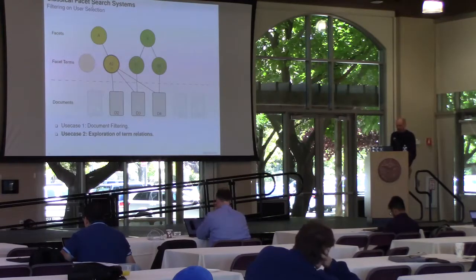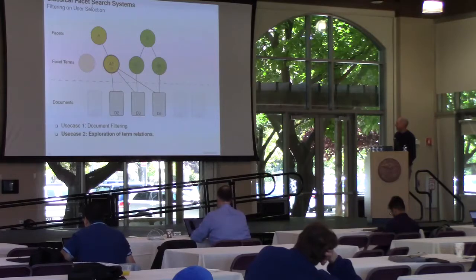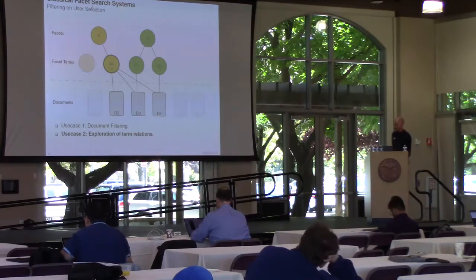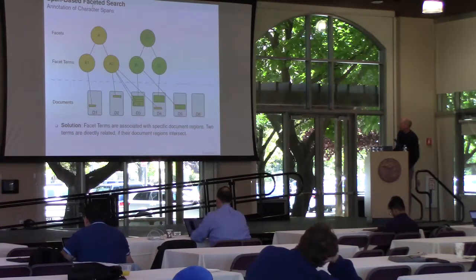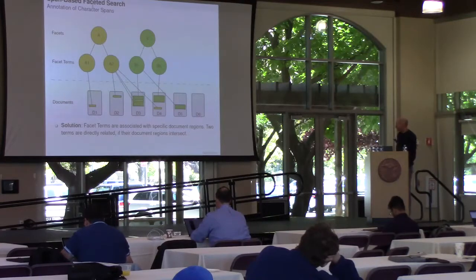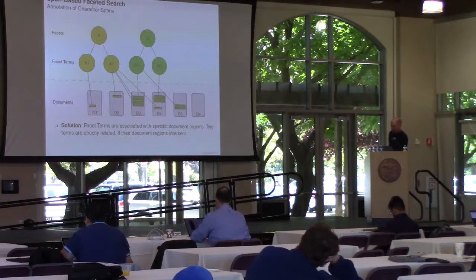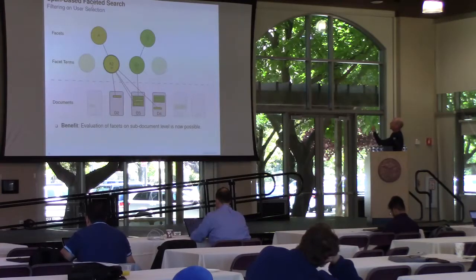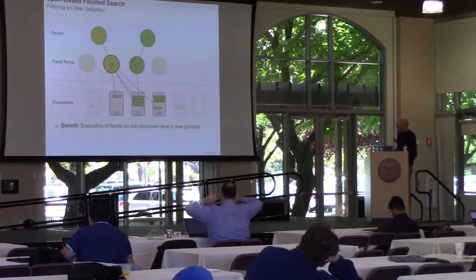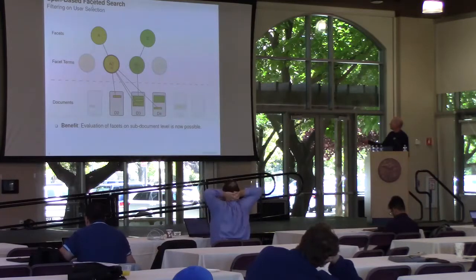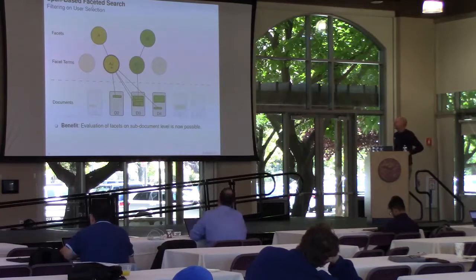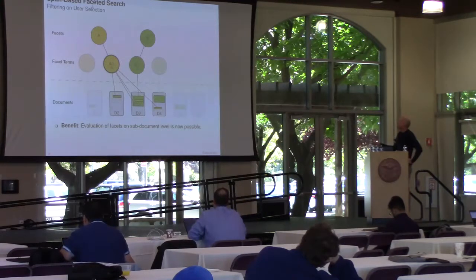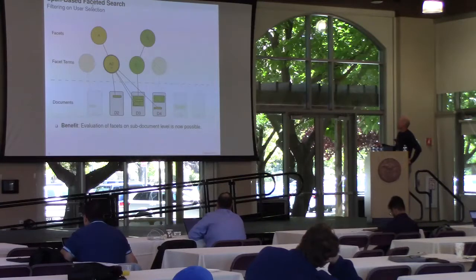To accommodate for this use case, what we do is say that the terms are not connected only to documents but to specific regions inside the documents. Now what could happen is that the user selects a2, then in this document b4 we have these two terms appearing here. They don't overlap in their spans, which means now we have no direct relationship between a2 and b2.